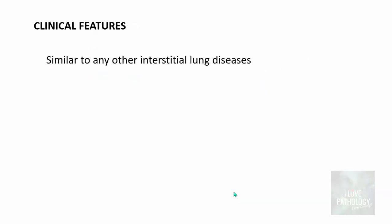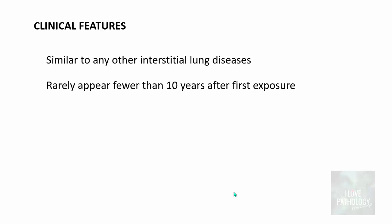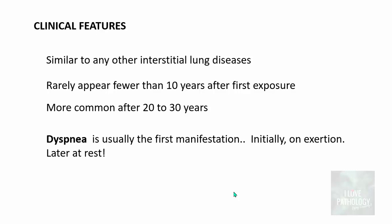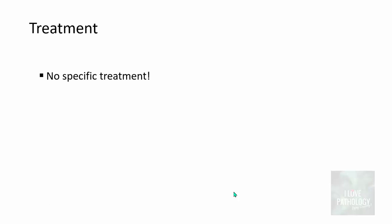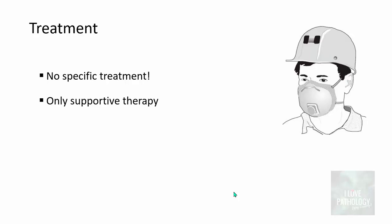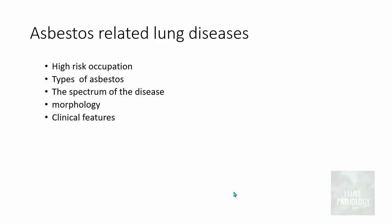Summarizing the clinical features: similar to other interstitial lung diseases, symptoms rarely appear fewer than 10 years after first exposure, and most commonly appear after 20 to 30 years. The initial manifestation is dyspnea — initially on exertion and later even at rest. The disease may remain static or progress to respiratory failure, cor pulmonale, or even death. Unfortunately there is no specific treatment, only supportive therapy. Prevention is key, and of late the incidence of asbestos-related diseases has come down because of proper protective measures taken by workers in these industries.